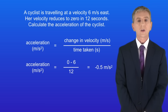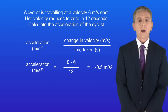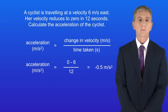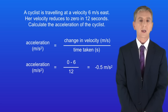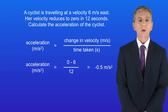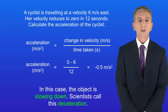The acceleration equals the change in velocity divided by the time taken. The final velocity was 0 meters per second east and the start velocity was 6 meters per second east. So the change in velocity is 0 minus 6 meters per second, giving us minus 6 meters per second. This took place over 12 seconds, giving us an acceleration of minus 0.5 meters per second squared. In this case the object is slowing down, and scientists call this deceleration.